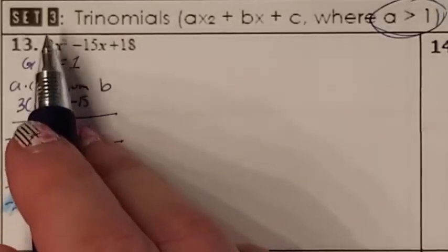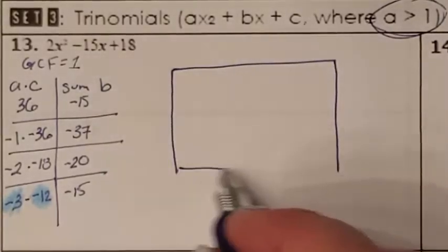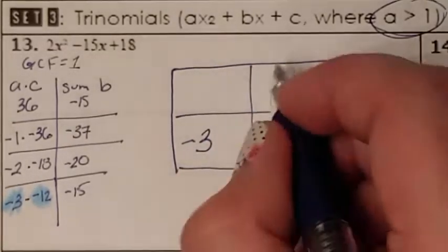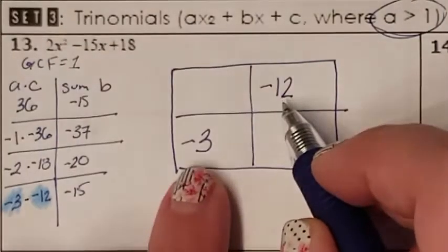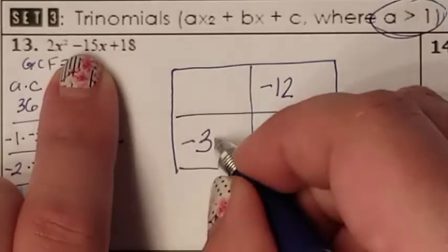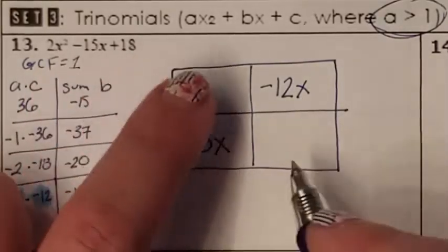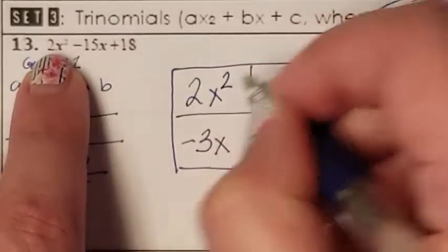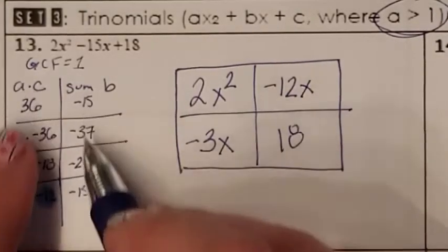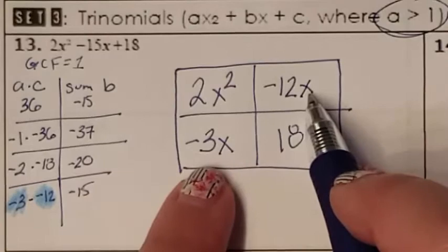Because A was not 1, I cannot just do parentheses right now. When A is not 1, you have to start with an area model. Negative 3 goes here, and negative 12 goes here. Why do we put negative 3 and negative 12? It's because this is how we chose to split up this minus 15x — these should be x's because it was an x. If we combine these back up, you get minus 15x. These two squares here go for the 2x squared and the 18. The A times C adds up to B list tells us how to split up the middle B term into the two parts we needed.